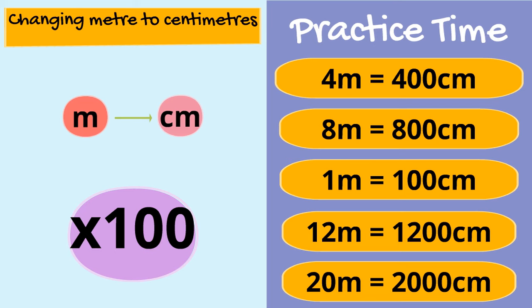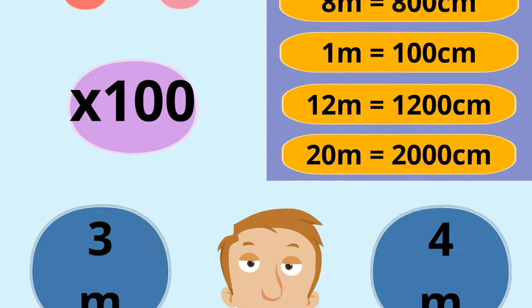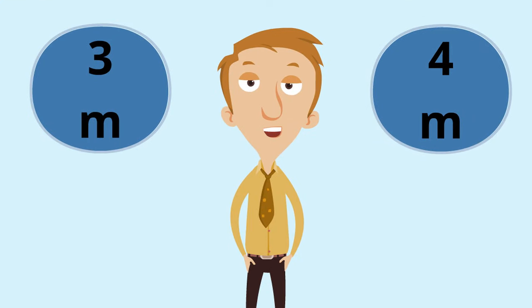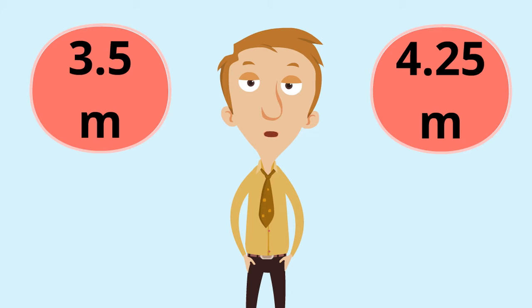So that's the easy part when we have simple numbers like 3 meters or 4 meters. But what do we do if we have a number like this? These are decimal numbers. To make sure that we can convert this kind of length correctly, we have to use our knowledge of place value.